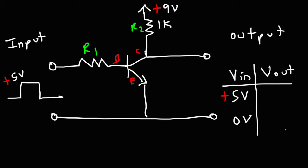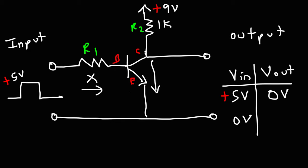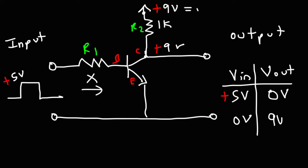What you need to take away from this is: when the input is 5 volts, and if the current flowing to the base is large enough to drive the transistor to saturation, the output voltage will be 0 volts. When the input is 0, there's not going to be any current flowing to the base of the transistor. So if there's no base current, there's not going to be any current flowing through the collector and emitter, which means there's no current flowing through R2. If there's no current flowing through R2, there's no voltage drop. So the voltage at point C will be the same as the voltage of the source — it's going to be 9 volts. The output will be whatever the collector supply voltage VCC is.